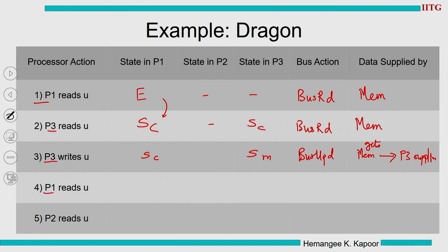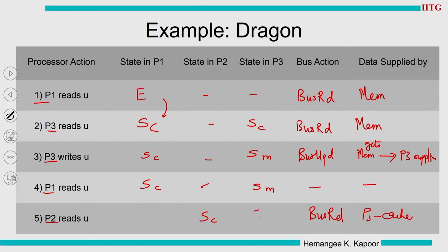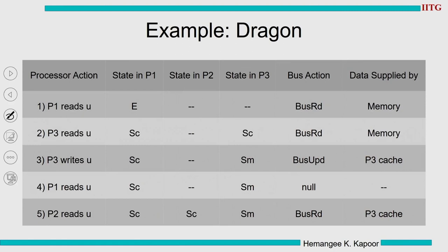P1 reads U — P1 already has the up-to-date copy, so no change, no action; P3 remains SM. P2 reads U — P2 doesn't have the block, sends bus read. P3 has the block in SM so P3 provides the data; P3 remains SM, P1 and P2 go to SC. A neater version is on the slide — memory gives data first, then P3 becomes the supplier on bus update.